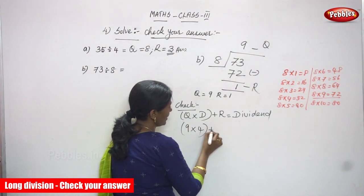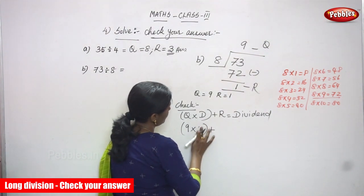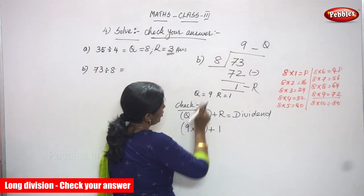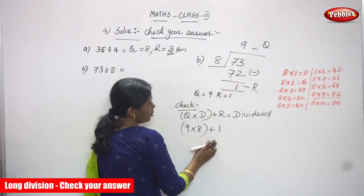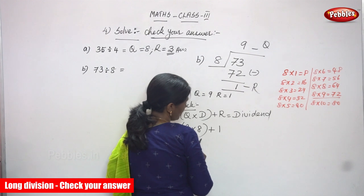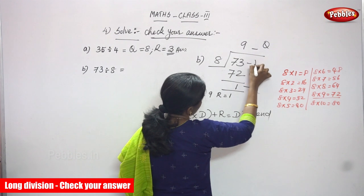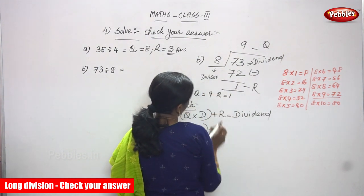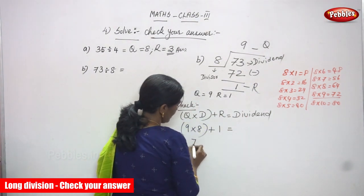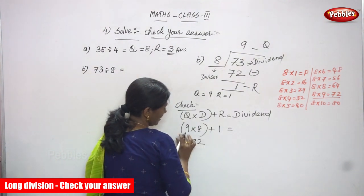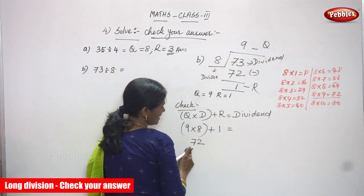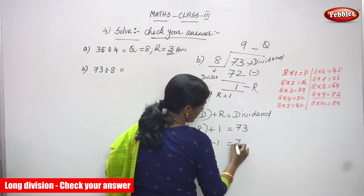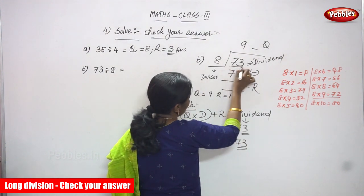Divisor is 8 and remainder is 1. Quotient is 9, divisor is 8, remainder is 1 — substitute all values in the formula. Multiply first, then add the remainder to get the dividend. So 9 × 8 = 72, plus remainder 1 equals 73. Here also 73, so you get the dividend 73.